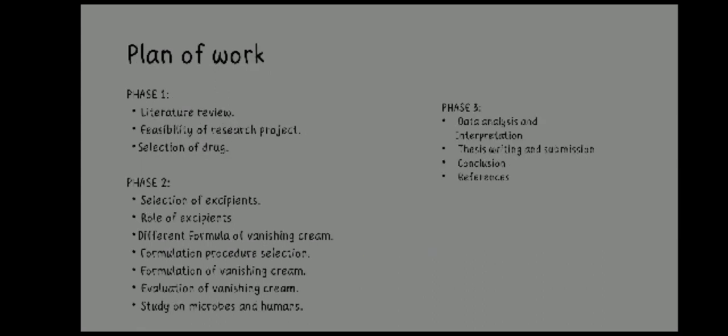The plan of work is divided into three phases. Phase 1 includes literature review through journals, books, online sources, and IP; visibility of research projects; and selection of drug. Phase 2 covers selection of excipients, role of excipients, different formulas of vanishing cream, procedure selection, formulation of vanishing cream, evaluation of vanishing cream, and study on microbes and humans. Phase 3 includes data analysis and interpretation, thesis writing and submission, and conclusion.